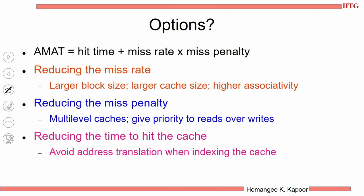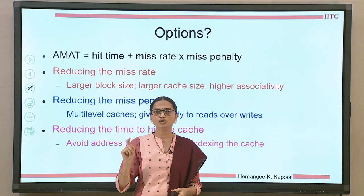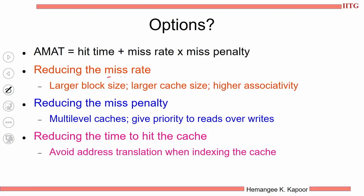Overall, the foundation of improving cache performance is the AMAT, and we want to concentrate on reducing the miss rate, reducing the miss penalty, and also reducing the hit time of the cache. What are the options available to us? To reduce the miss rate, we have three options: use a larger block, use a larger cache, or use larger associativity. For miss penalty we have two options — using multi-level caches and giving priority to reads. For reducing the hit time, we wish to avoid address translation while indexing the cache. We will see all the details during this lecture.